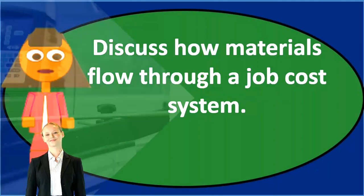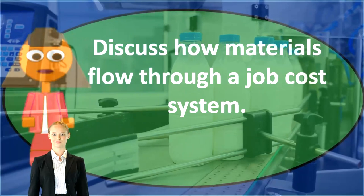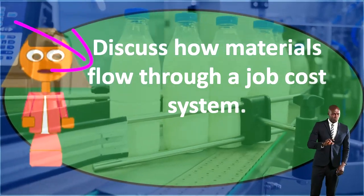Now, if it's indirect materials, we don't know which job to apply it to. Then we're going to move those on our books, not to a job cost sheet because we don't know where it goes, but to factory overhead.